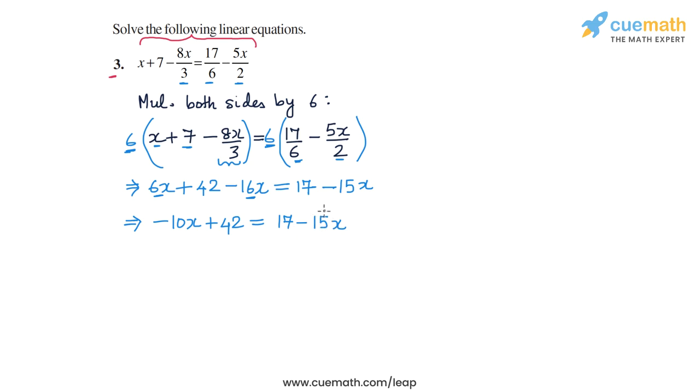Now what we can do is take this minus 15x and transpose it to the left side, combine it with minus 10x. So we will get minus 10x and the transposed term will be plus 15x, and then we have this plus 42, so plus 42 is equal to 17 on the right hand side.